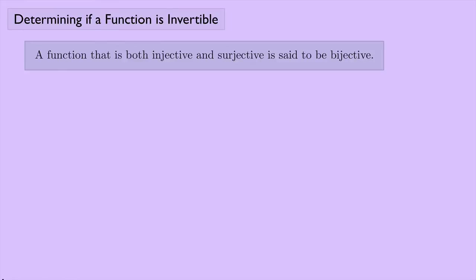We just saw that in order for a function to have an inverse, it has to be both injective and surjective. A function that is both injective and surjective is said to be bijective. We also have other terminology: something that is injective is called 1-to-1, and something that is surjective is called onto. So bijective means it's both 1-to-1 and onto.